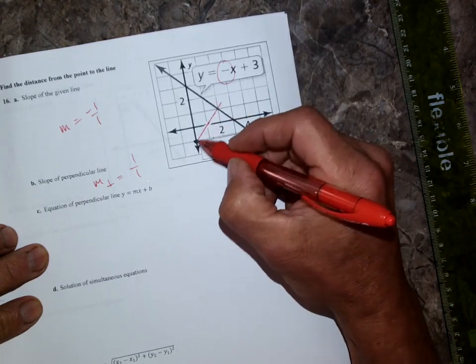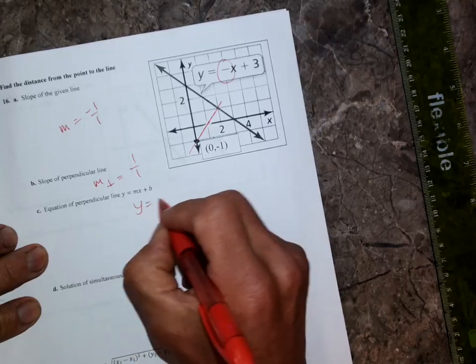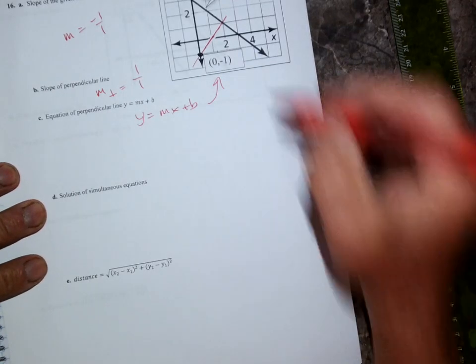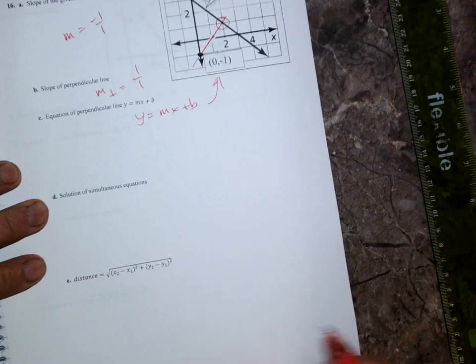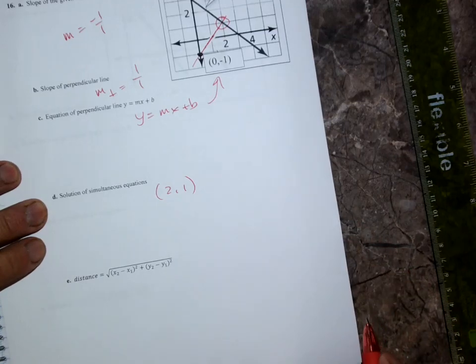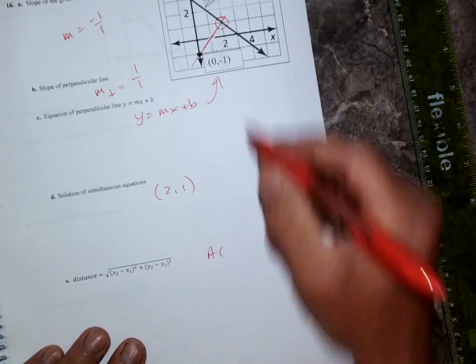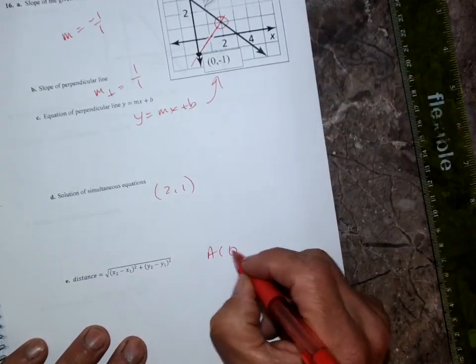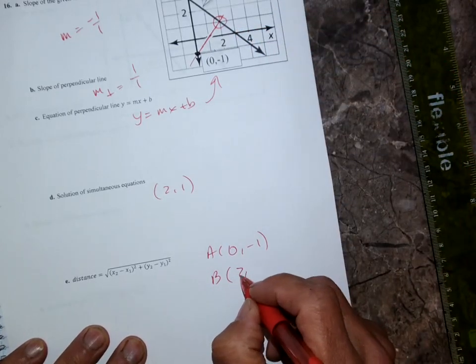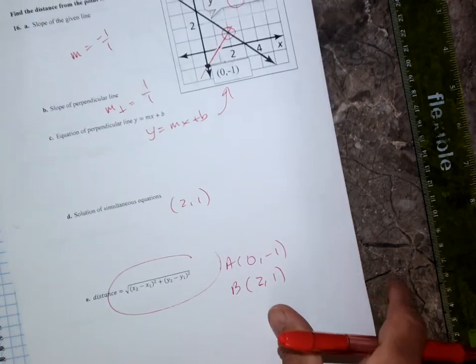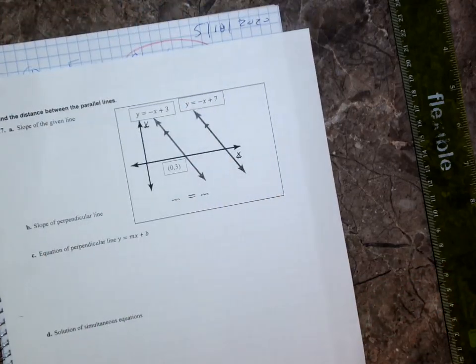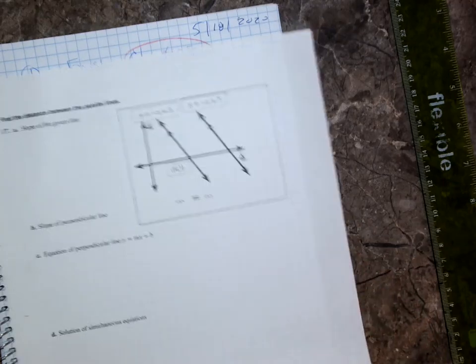The solution to the simultaneous equation is right there at that point where they intersect at 2, 1. If you want to use the distance formula, point A is at 0, negative 1, and point B is at 2, 1. You just have to use your distance formula. You can do this. Find the distance between the parallel lines. Graph paper would be really helpful. I'm going to do this on graph paper.